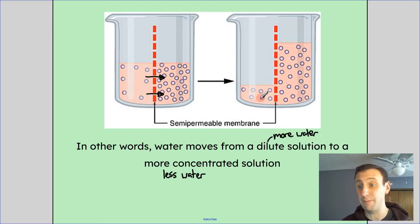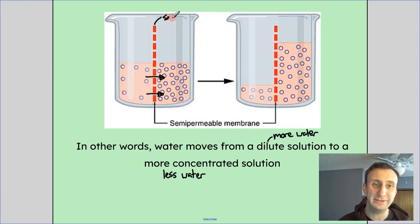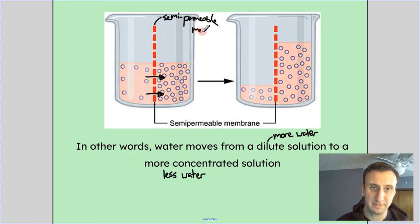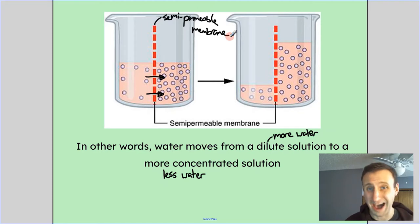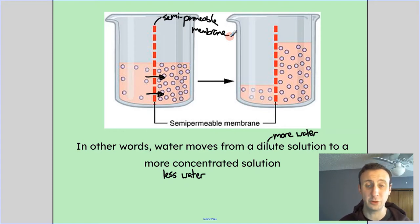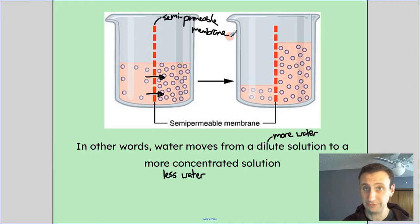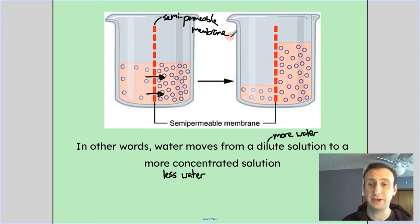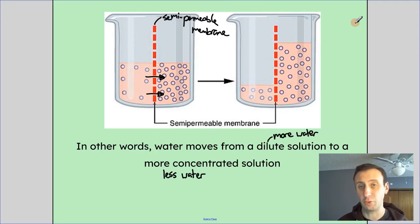Osmosis will cause a bunch of water to move from left to right. This red line represents my semi-permeable membrane. So osmosis is water moving from where there's more water — a higher concentration — to where there's less water — a lower concentration. When I talk about solute, it's moving from where it's more dilute, less concentrated, to where it is high concentration of solute, or more concentrated. Just remember that water and solute are going to be opposites here.